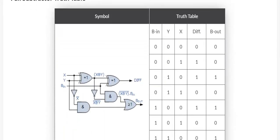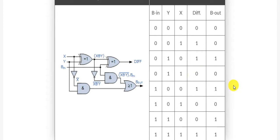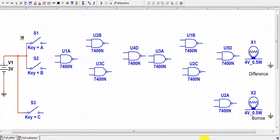This is the truth table and symbol for the full subtractor, which can be realized with the help of two XOR gates and two NAND gates — one terminal is connected with a NOT gate, and two inputs are fed to one of the OR gates. But we can also realize this with NAND gates. Let us construct the circuit in our practicals and verify the truth table.